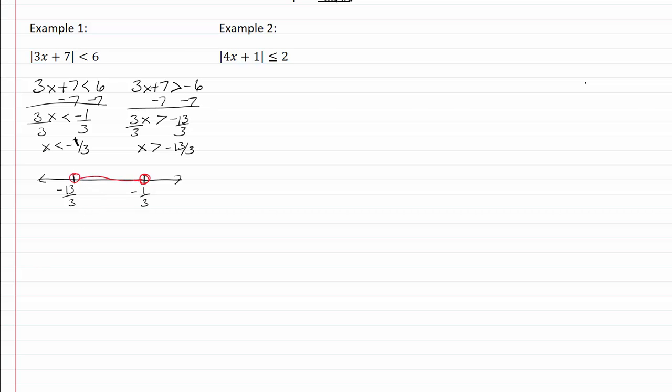And our graph will go in between those two numbers. Then our inequality solution set with interval notation will be parenthesis negative thirteen-thirds comma negative one-third parenthesis.